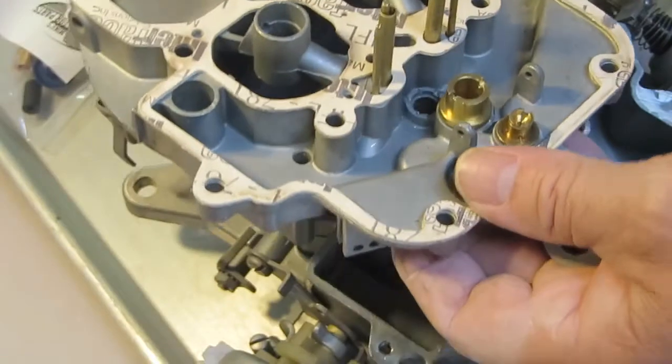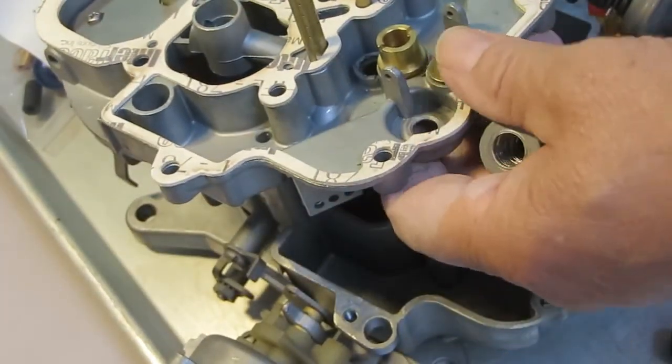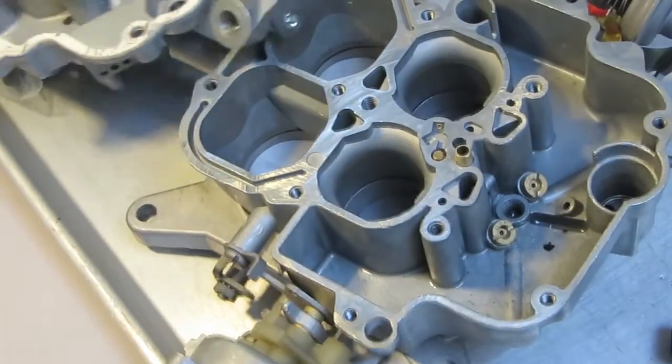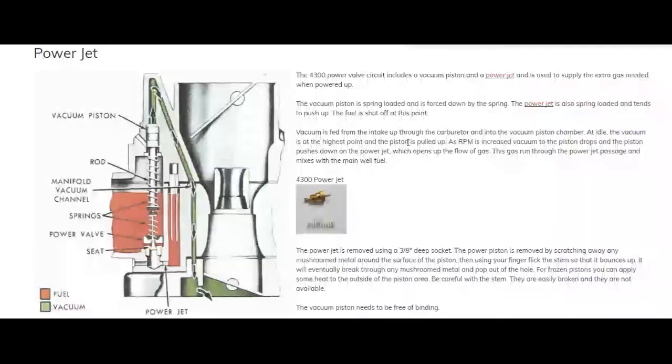Now I'm going to show you an illustration. So here's an illustration of the 4,300 power jet circuit. And what it includes here, right down here, is your power jet.